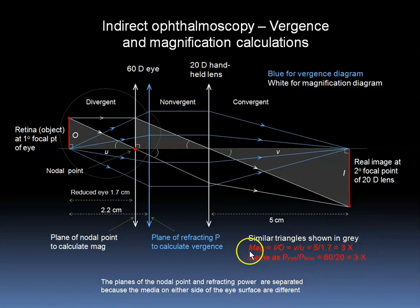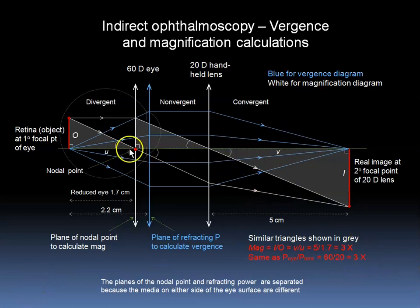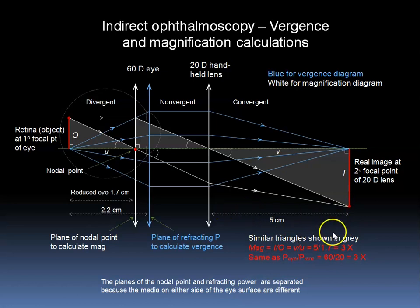We now have another formula which relates the power of the eye to the power of the handheld lens. The power of the eye divided by the power of the lens — in this case 60 divided by 20 — gives the number 3 for 3 times linear magnification. Because the distances V and U in meters are the inverse of the power of the lenses involved, this formula is another way of stating the original one. Either take 5 divided by 1.7, or take 60 divided by 20, and we get the same result.